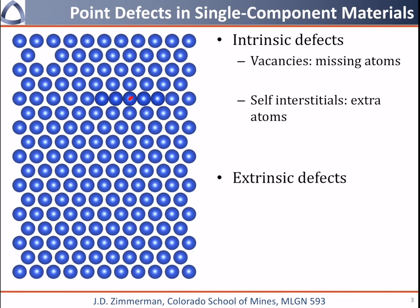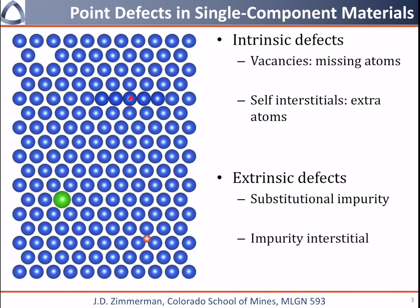We also have extrinsic defects. The classic example is a substitutional impurity — we removed one blue atom and put a green atom in its place. We can also have an impurity sit on an interstitial site, shown here in red. One interesting thing is that we usually can't fit any atom into most interstitial sites without distorting the lattice. This red atom is a little too big for that interstitial site, so it distorts the atoms around it just a little bit.